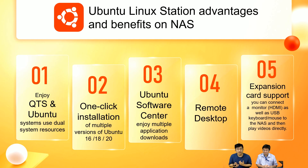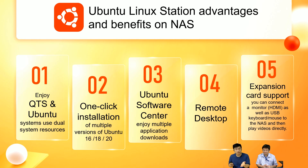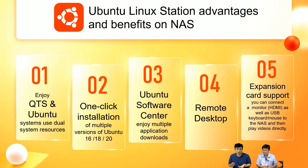The second benefit: installing the Ubuntu Linux Station is very easy — just go to the app center, click the icon, and start downloading. When done, you can choose to install Ubuntu version 16, 18, or 20. The third benefit: Ubuntu has its own software center, so you can download additional applications onto your Ubuntu computer.